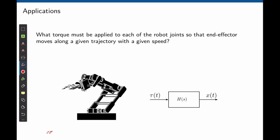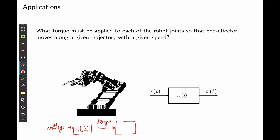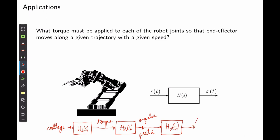For example, we can start by finding a relation between the applied voltage to a given motor and its output torque — call this transfer function H1. The torque, once applied to a mechanical system, creates an acceleration. Through transfer function H2, we can find the angular displacement of each joint. Through H3, the angular position maps to the tip position of the robot.